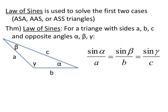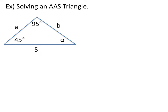The Law of Sines is used to solve angle-side-angle, angle-angle-side, or angle-side-side triangles. If you have a triangle with angles labeled alpha, beta, and gamma, and side lengths A, B, and C across from the corresponding angles, then the Law of Sines says the sine of alpha over A equals the sine of beta over B, which equals the sine of gamma over C.